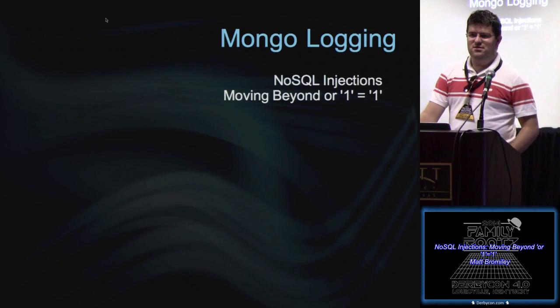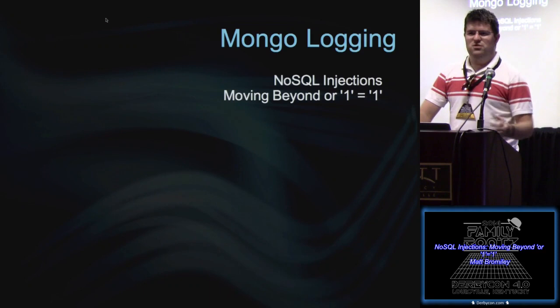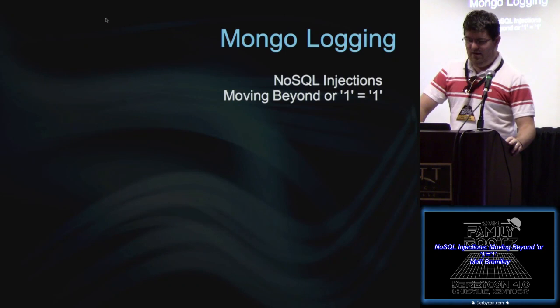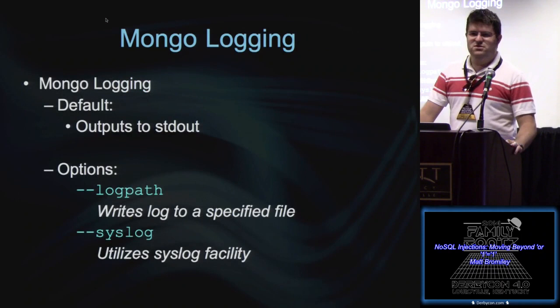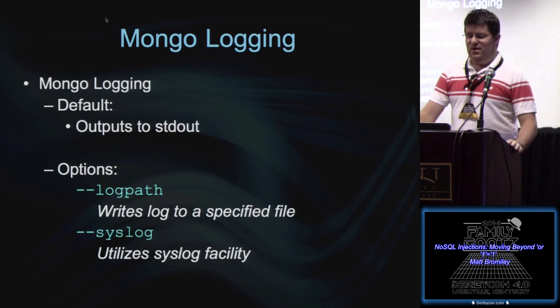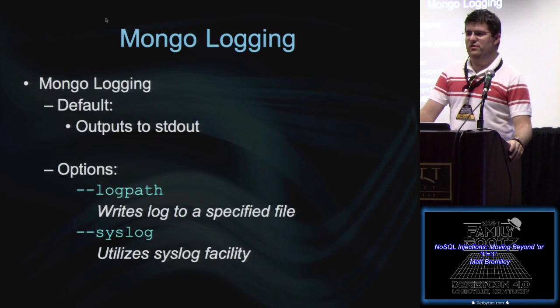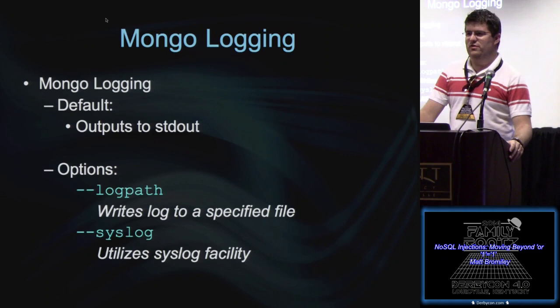So I've taken it upon myself to start learning about this. Mongo is an interesting DB with some pretty neat features. Let's take a look at some of the properties of Mongo logging and see how we can use that to our advantage. First and foremost, Mongo logging defaults to standard out. If I have terminal access or if I'm running Mongo, I can see everything that happens from the screen. There are ways to configure Mongo to run as a service. There are two options by default: you can use log path to output to a specific file, or you can use syslog. So there are a couple of different ways to not log to standard out and get the log somewhere else.